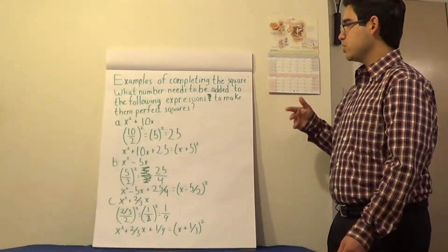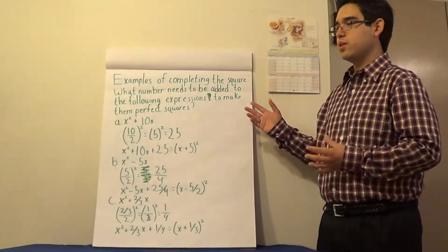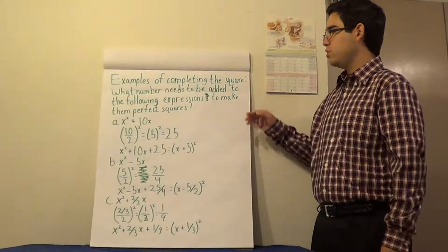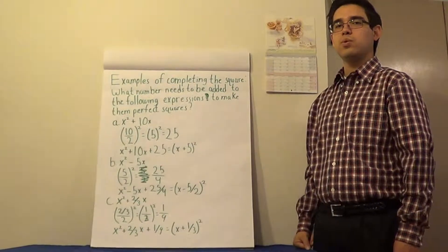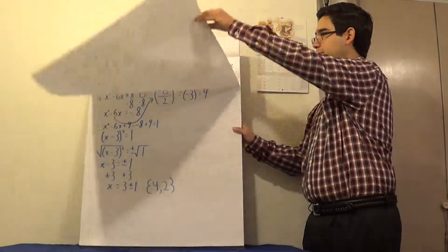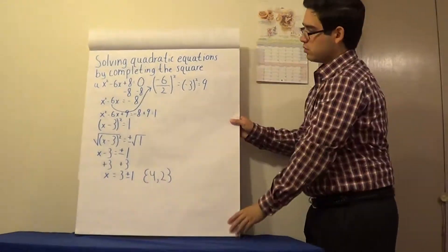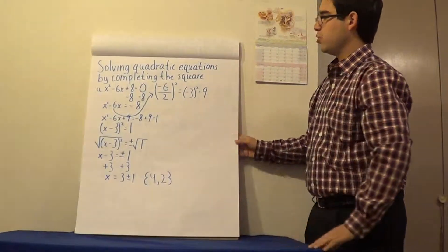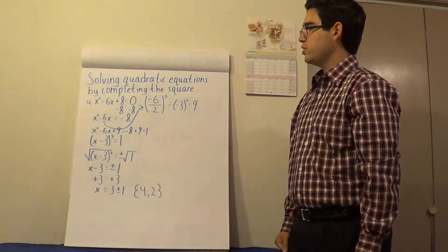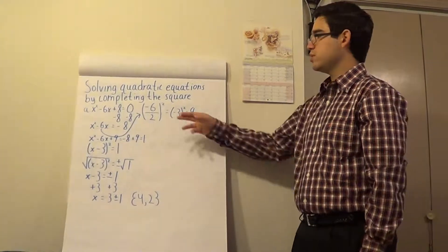Now that we've seen a few examples of completing the square and have an idea of how to do this, let's look at some examples of how we could use this method to solve quadratic equations. Let's look at our first example, a: we have the quadratic equation x squared minus 6x plus 8 equal to 0.